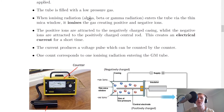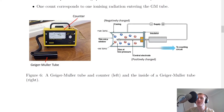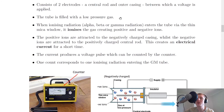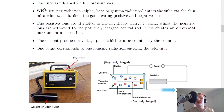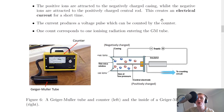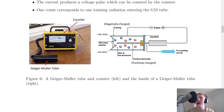The tube is filled with a low pressure gas. Because we've got a positive and negative charge, this creates an electric field, which creates a potential difference or voltage between the two electrodes. When ionizing radiation — alpha, beta or gamma — enters the tube via the thin mica window, it ionizes the gas, creating positive and negative ions.